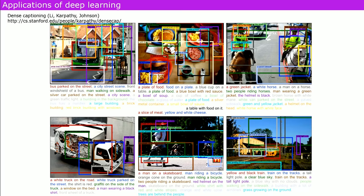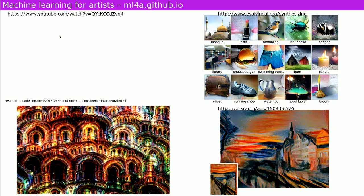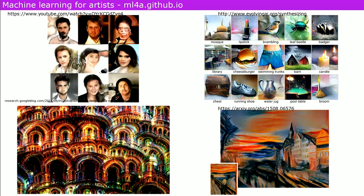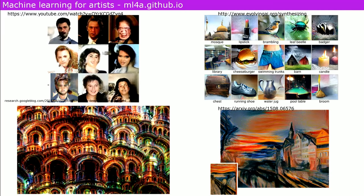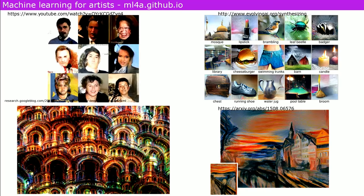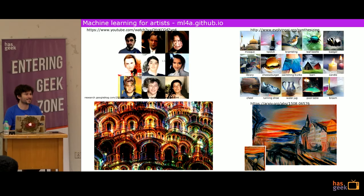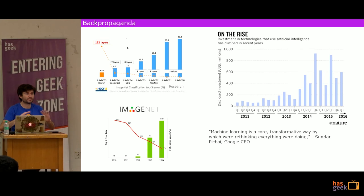There are also captioning systems that take images and describe them in natural language, and many other applications. My personal favorite is artistic applications — generating images, sounds, and text that's creative. Because of all these disparate applications, there's been a huge increase in interest in this field, a lot of investment, a lot of hype, and a lot of press. Many people are calling this the new golden age of AI, with the first golden age being in the 1950s and 60s when humans first became excited about creating AI.